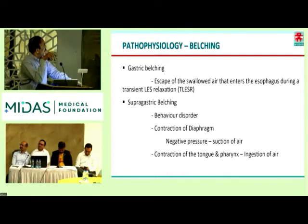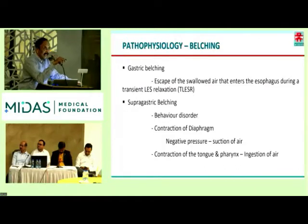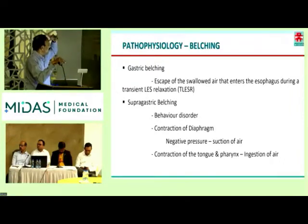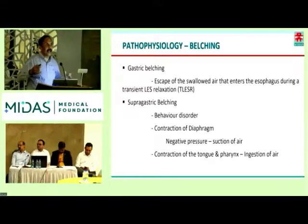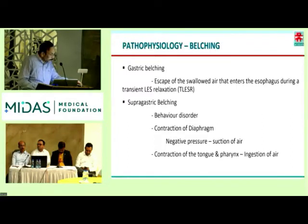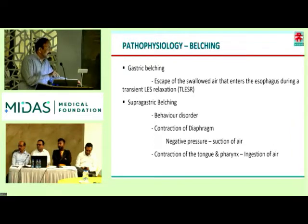Belching has predominantly two types: gastric and supragastric belching. In gastric belching, the escape of air occurs from the stomach to the esophagus during transient relaxation of the LES. In supragastric belching, it's a behavior disorder — what you get is contraction of the diaphragm, which causes a negative pressure, wherein the air is sucked from the atmosphere into the esophagus. Sometimes it doesn't go into the stomach and is expelled out. In another mechanism, there is a contraction of the tongue and pharynx where the pharynx pressure increases over the esophagus, leading to ingestion of air in the esophagus.